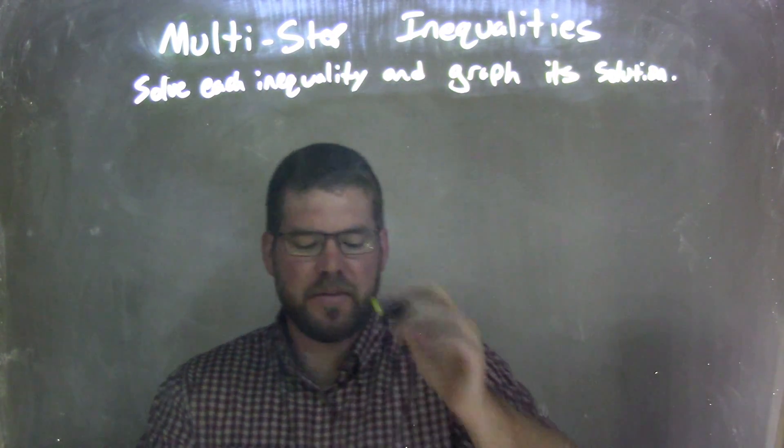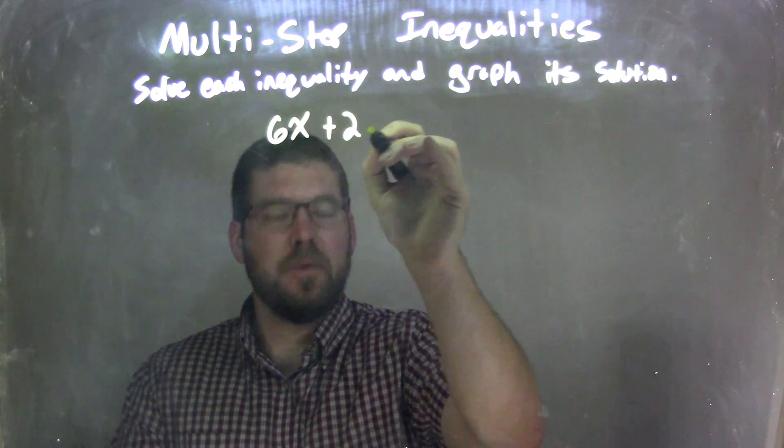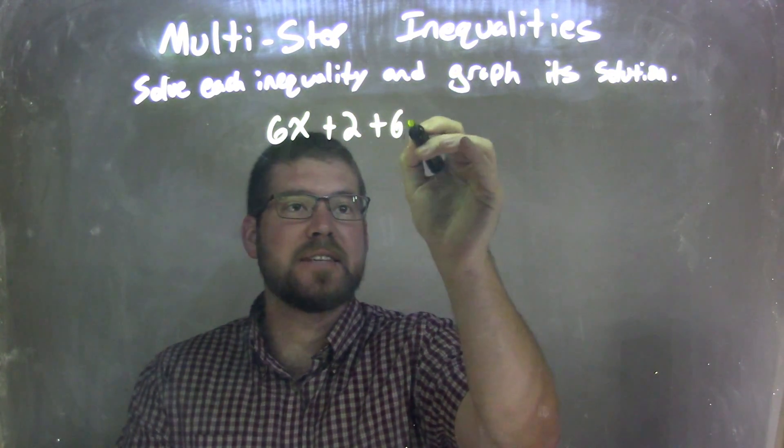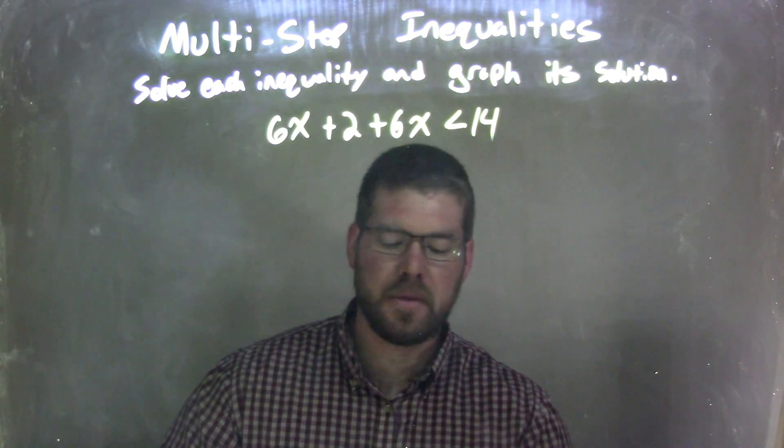So if I was given this inequality, 6x plus 2 plus 6x is less than 14, okay? Well,